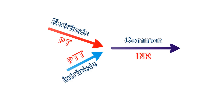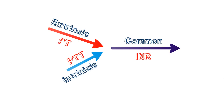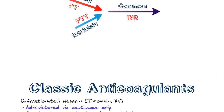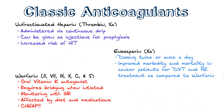Using these tests, you can determine defects in the pathway — such as if you have hemophilia A or hemophilia B, you may see an alteration in these tests. We'll talk about how to interpret PT, PTT, and INR in another video. But let's talk about the classic anticoagulants we use in the hospital.